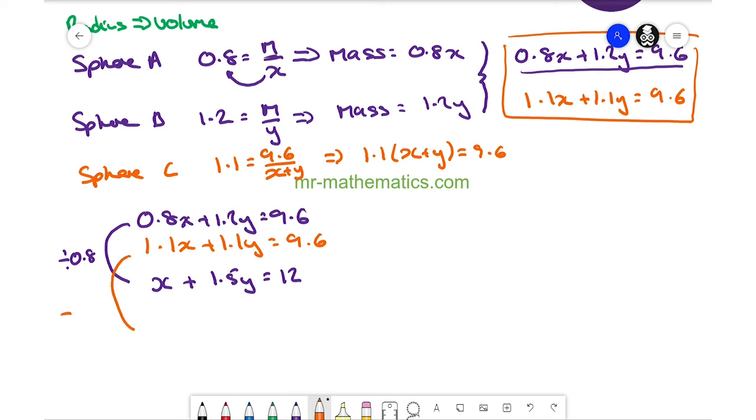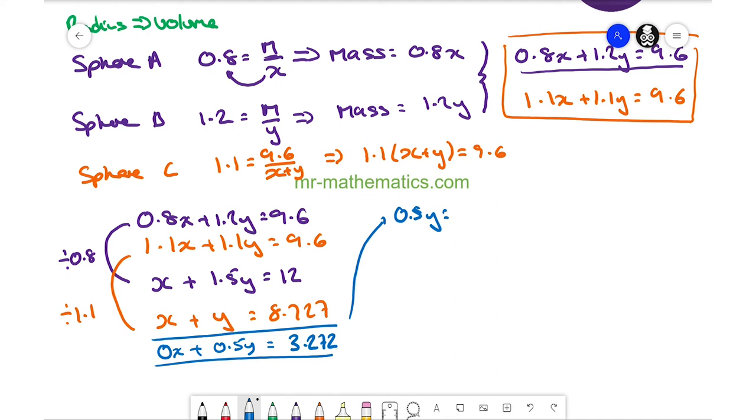I divide the second equation by 1.1 to get the same coefficient of X. So we have X plus Y equals 8.727. I can subtract the second from the first, which eliminates X. So we have 0.5Y equals 3.27. Multiplying both sides by 2, Y is approximately 6.6.